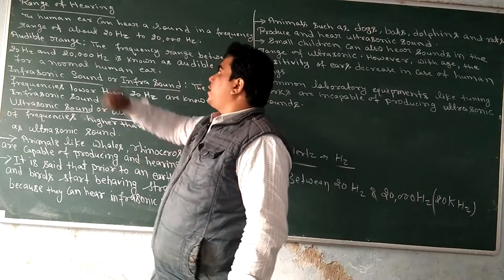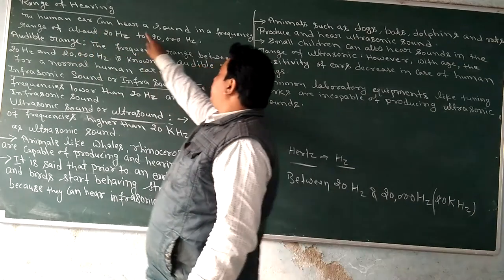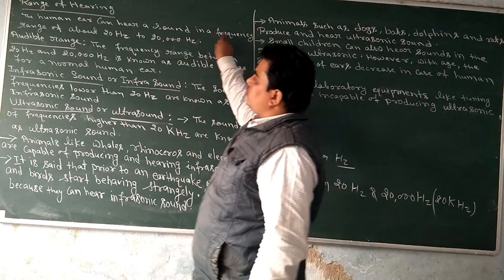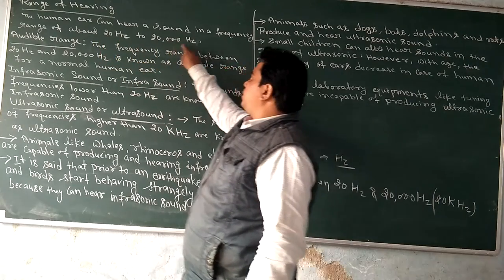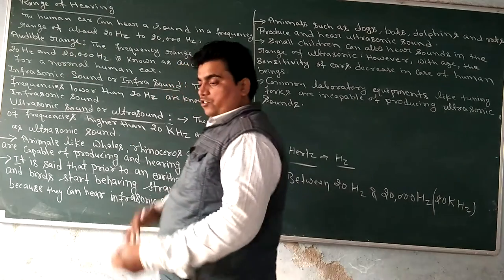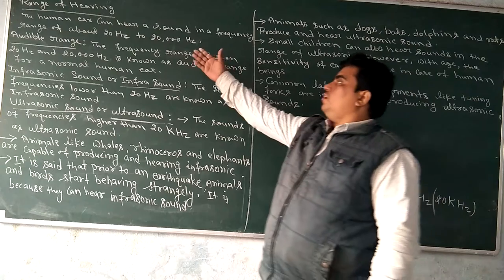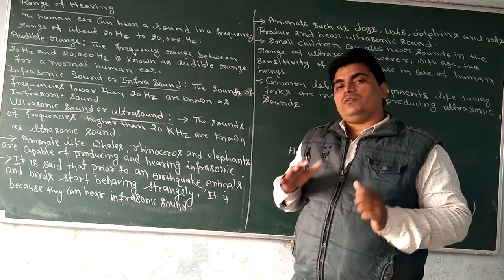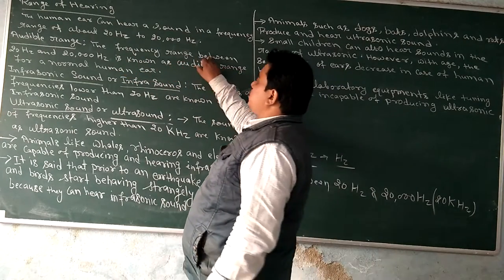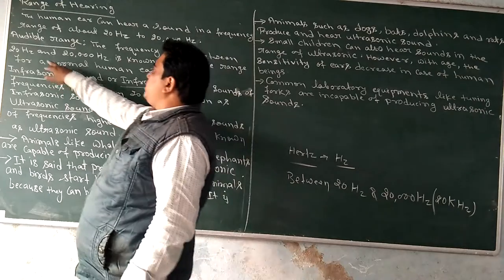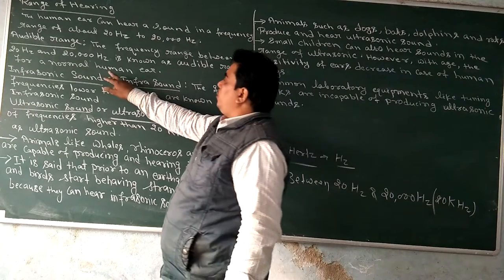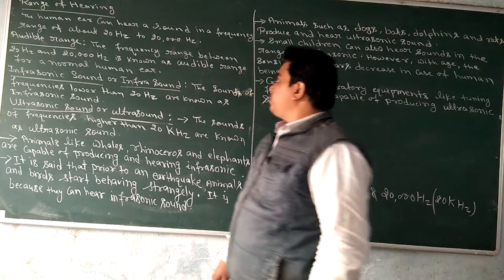Now, look here — range of hearing. The human ear can hear sound in a frequency range of about 20 to 20,000 hertz. This range is known as the audible range, and the sound of this frequency range is known as audible sound. The frequency range between 20 Hz and 20,000 Hz is known as the audible range for a normal human ear.